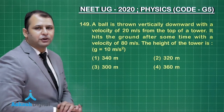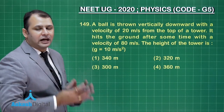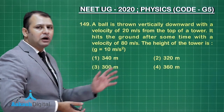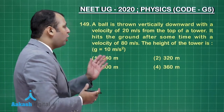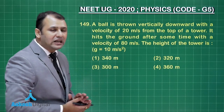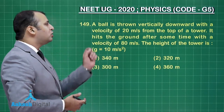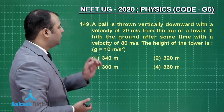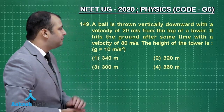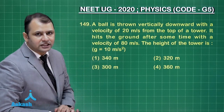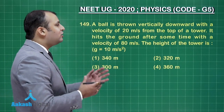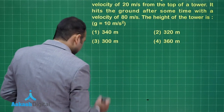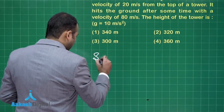Question number 149 belongs to chapter kinematics, one-dimension motion. This is an easy formula-based question. As per the question, a ball is thrown vertically downward with a velocity of 20 meters per second from the top of a tower. It hits the ground after some time with a velocity of 80 meters per second. The height of the tower is to be found.